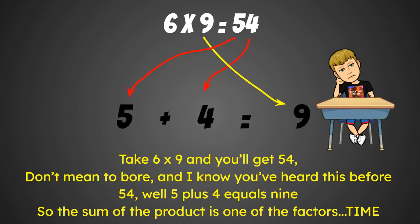Take six times nine and you'll get fifty-four. I don't mean to bore and I know you've probably heard this before. Fifty-four, well five plus four equals nine. So the sum of the product is one of the factors.